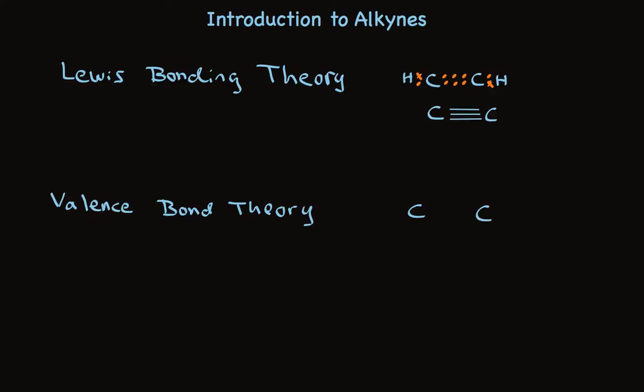Valence bond theory gives us a more detailed picture. To begin with, we're talking about carbons that are only bonded to two atoms, so they're sp-hybridized. The two carbons are held together by a sigma bond, a bond that's made by end-to-end overlap of sp orbitals, as I've shown here.